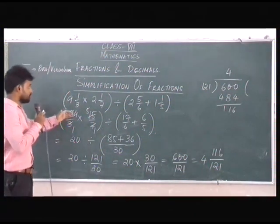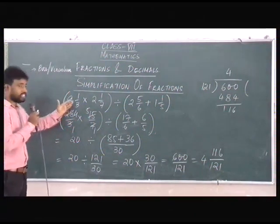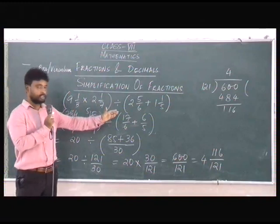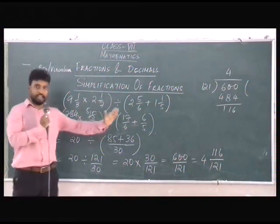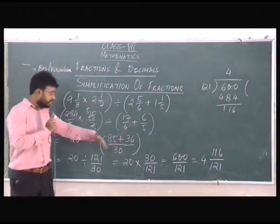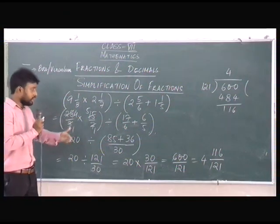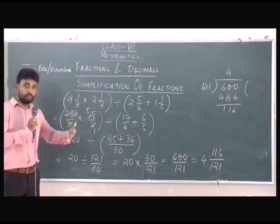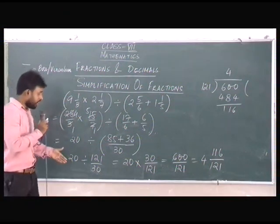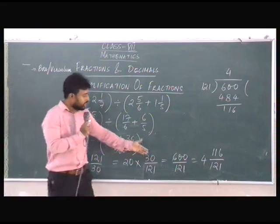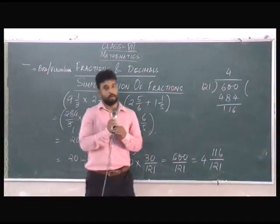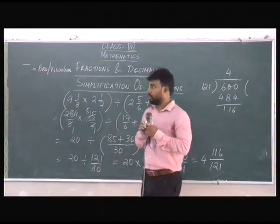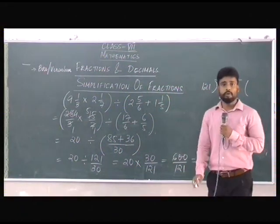So, first we change into improper fractions, then we solve the brackets separately, then we remove the bracket and solve further, and ultimately we change the answer into a mixed fraction. This is how you solve problems on simplification.